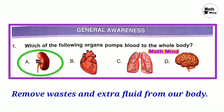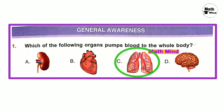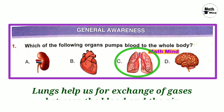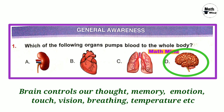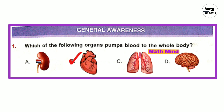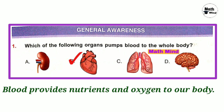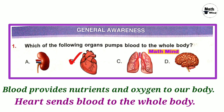Our kidneys remove wastes and extra fluid from our body. Humans have a pair of lungs which are sac-like structures that help in exchange of gases between the blood and air. The brain controls thought, memory, emotion, touch, vision, breathing, and temperature — almost all activities of our body. So option B is correct: our heart pumps blood to the whole body.